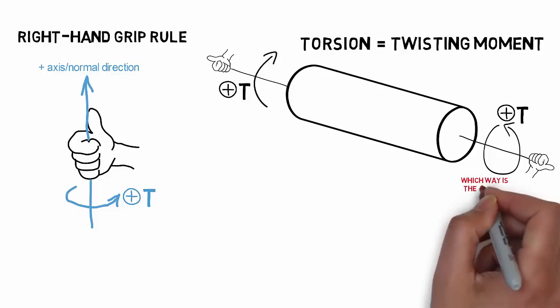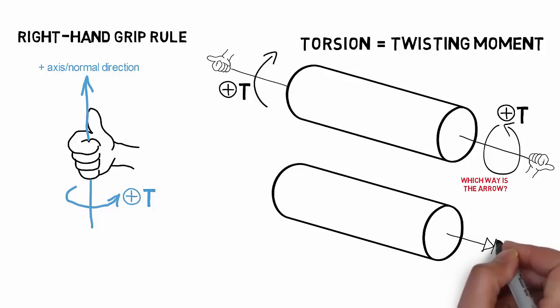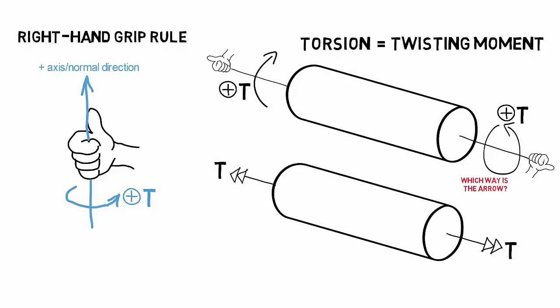Creating three-dimensional representations of torsion moments in a two-dimensional drawing space can often lead to confusion. To prevent this, a simplified notation of a double headed arrow is often used to denote a torsional moment. Here, the direction of the arrows align with the pointing direction of the thumb in the right hand grip rule.